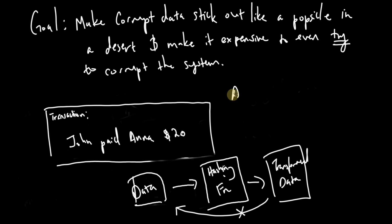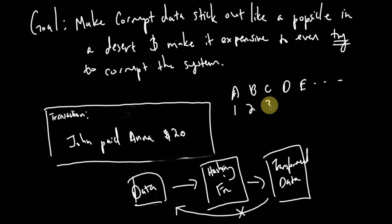One easy example of a transformation is: take this alphabet, assign a number to each letter, then replace all the letters in the transaction with those numbers and multiply them all together — you get some big number. That number can be considered the transformed data. Except in this example it's possible to convert the transformed data back into the original, and you don't want that. So that's what hashing avoids.